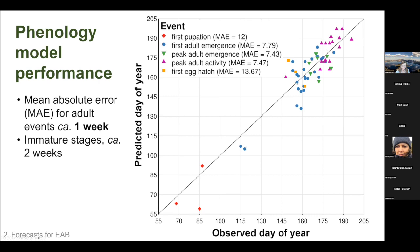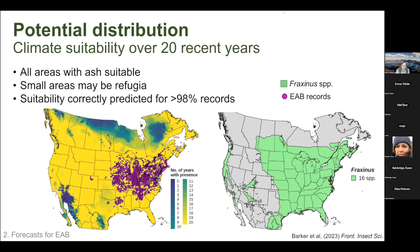I evaluated predictive performance of the model. On this plot, the y-axis shows predicted day of year and the x-axis shows observed day of year. The diagonal line represents a one-to-one relationship. Points closer to this line indicate higher predictive accuracy. I had very few observations for first pupation and first egg hatch — only three each. Most validation points were for adult events, and the mean absolute error for adult events was about one week.